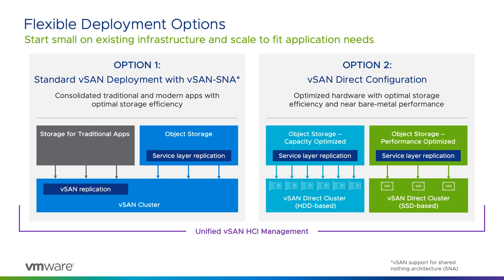The first option, vSAN SNA, is ideal for customers who want to run modern stateful services alongside traditional applications in the same vSAN cluster. In this configuration, the storage is configured much like any other vSAN object, but customers are leveraging the availability features that come with the modern stateful services and have replication turned off at the vSAN layer for minimum storage overhead and space savings. This option is ideal for customers wanting to get started fast, proof of concepts, or customers wanting to leverage general purpose hardware for multiple workloads.